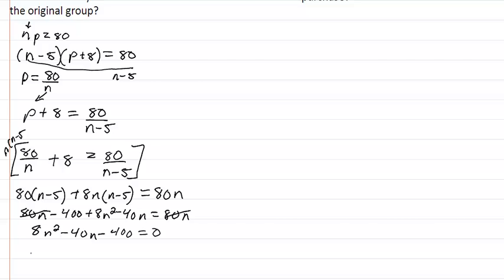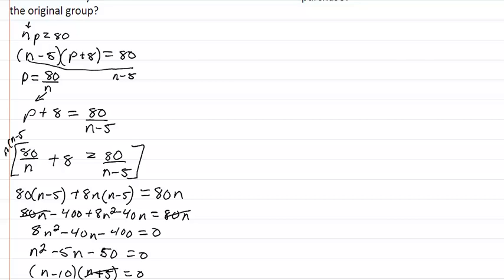Dividing everything by eight gives n squared minus five n minus fifty equals zero. This factors as n minus ten times n plus five equals zero. The factor n plus five gives a negative answer, so we ignore that one. Therefore n equals ten — there were ten people in the original group.